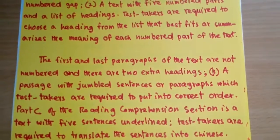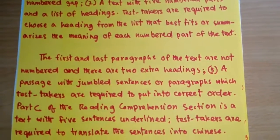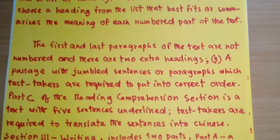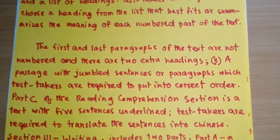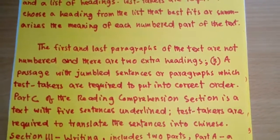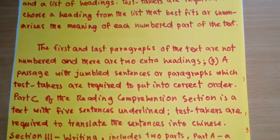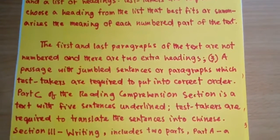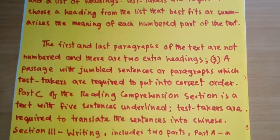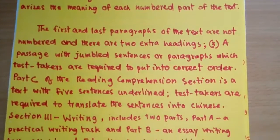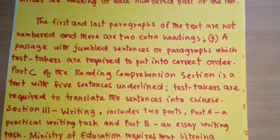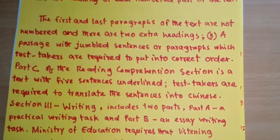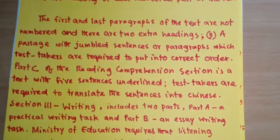The third Part B item type is a passage with jumbled sentences or paragraphs which test-takers are required to put in correct order. Part C of the reading comprehension section is a text with five underlined sentences that test-takers are required to translate into Chinese.